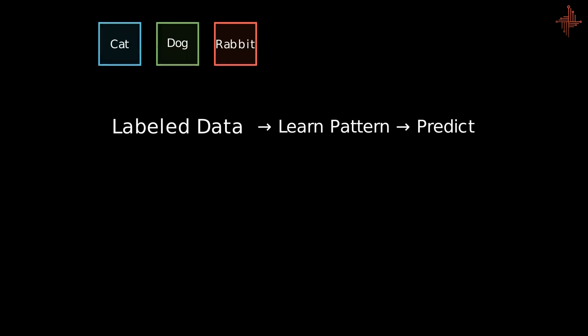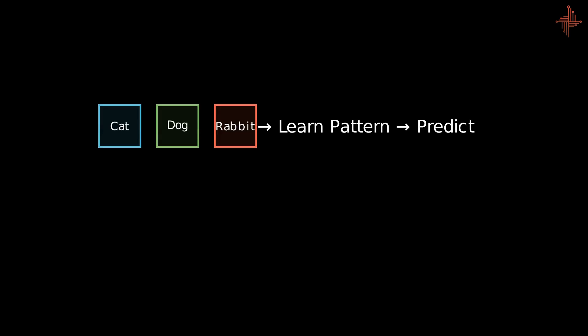In supervised learning we feed labeled data, which means if we give an input to the model we also provide the corresponding output. Then the model finds the pattern in the data and uses them to make predictions.